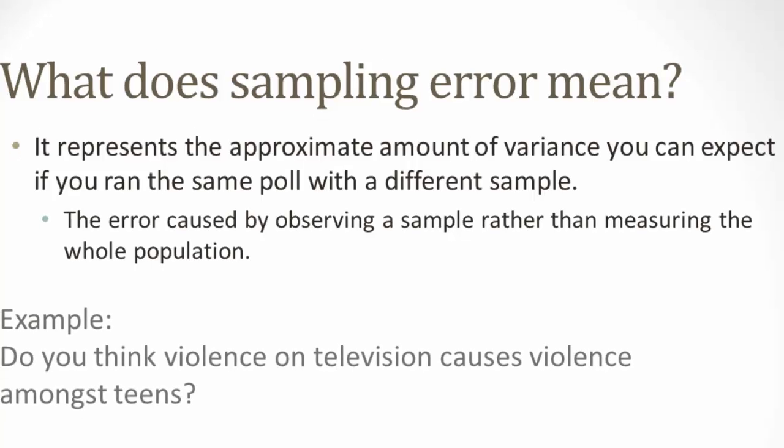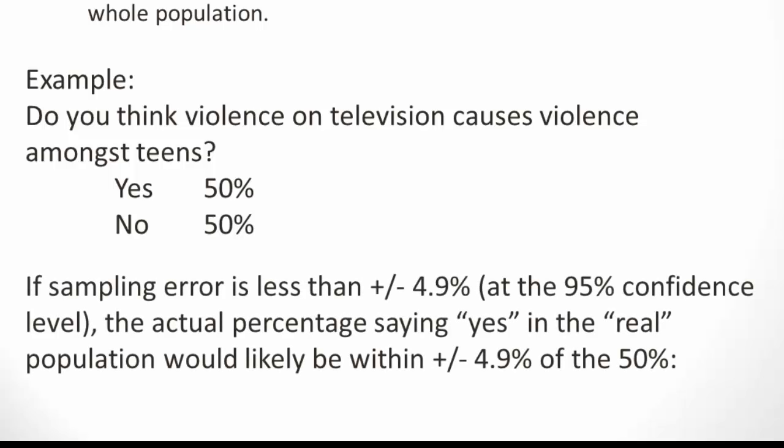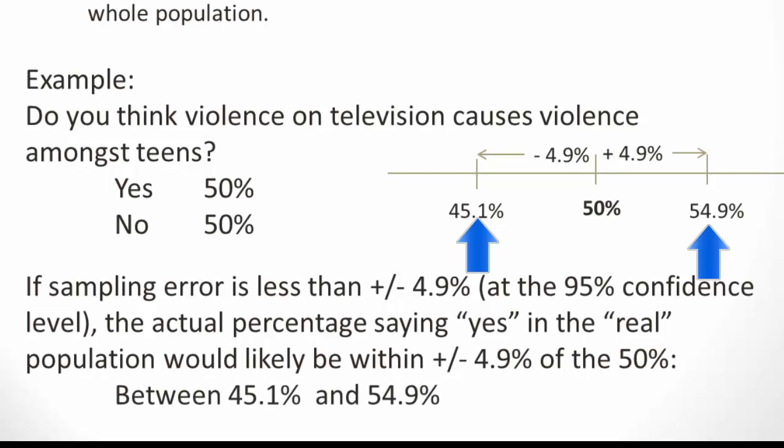Assume you have a question asking people if they thought violence on television causes violence amongst teens. You ask this of a sample of a population, and you get a 50-50 split. If sampling error was, say, less than 4.9%, we would assume that the actual percentage feeling the same way in the overall population would likely vary by less than plus or minus 4.9% of our finding of 50%. In other words, it could be as low as 45.1% saying yes, or as high as 54.9% yes.